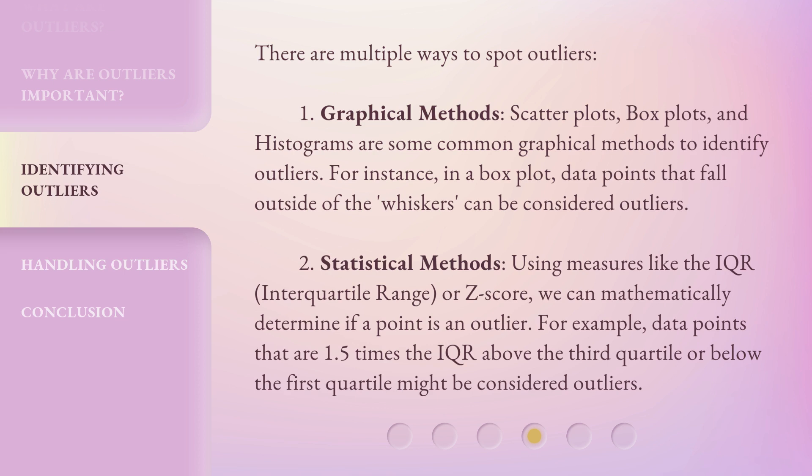Two, statistical methods. Using measures like the IQR (interquartile range) or Z-score, we can mathematically determine if a point is an outlier. For example, data points that are 1.5 times the IQR above the third quartile or below the first quartile might be considered outliers.